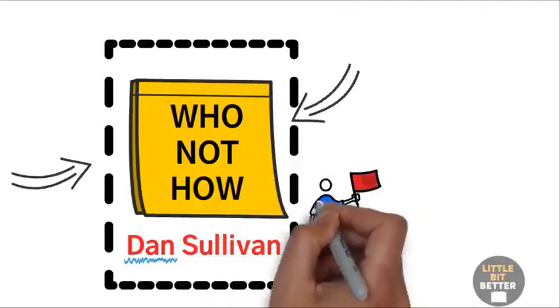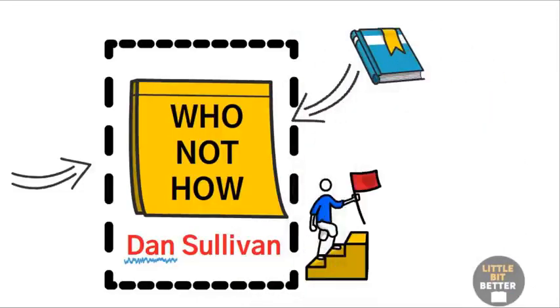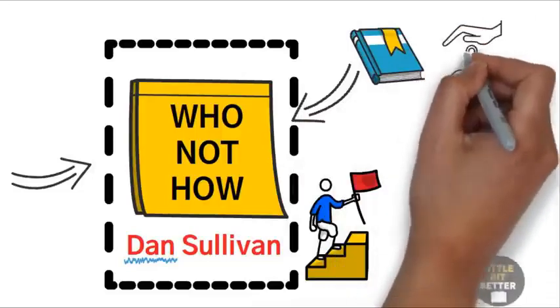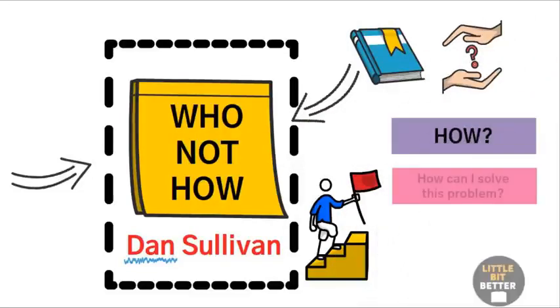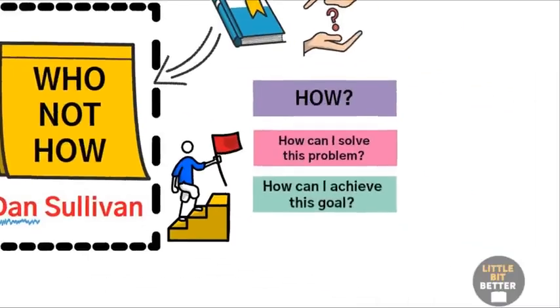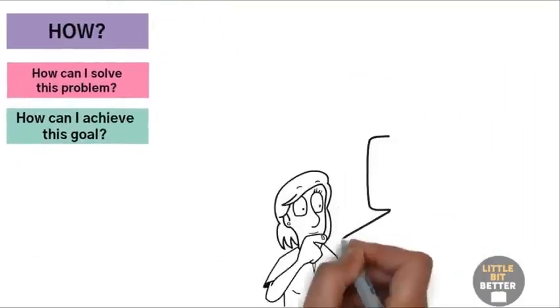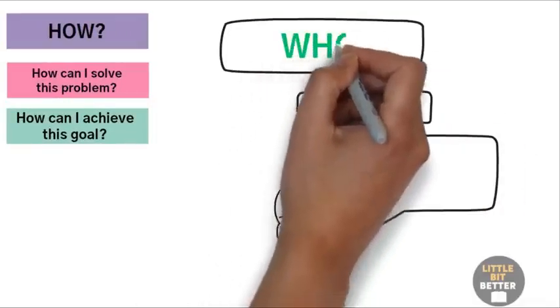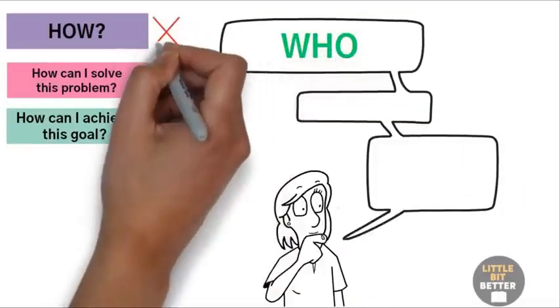Dan says that whenever we have a goal, such as writing a book, or whenever we face a problem, the first question most of us ask is, How? How can I solve this problem? Or, how can I achieve this goal? According to Dan, this is a terrible question to ask. The right question is, Who, not how?